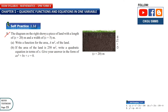The diagram on the right shows a piece of land with length x plus 20 meters and a width of x plus 5 meters — x plus 20 and x plus 5. This is the length and width. The first question, A, asks you to write a function for the area of the land.